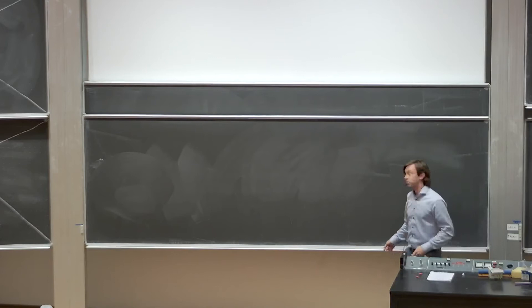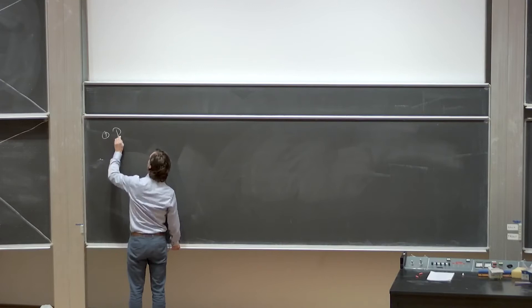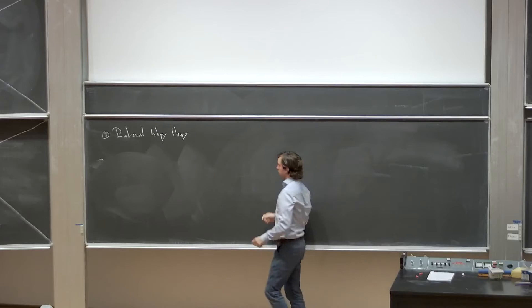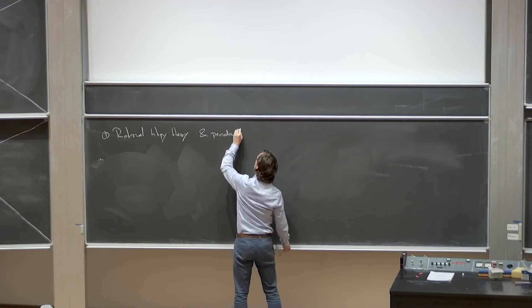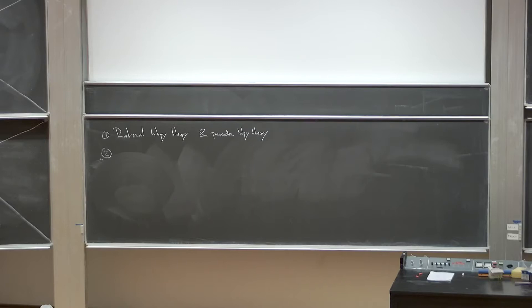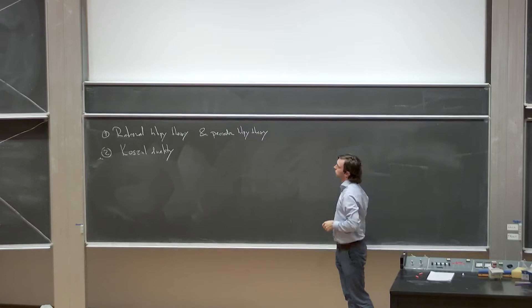Let me very quickly outline the plan for these three lectures, only very roughly. Today I want to do a review of rational homotopy theory and a bit of an intro to periodic homotopy theory in a sketchy way. Tomorrow I want to delve into Koszul duality — talking about Koszul duality for operads and algebras for operads in a rather general setup.